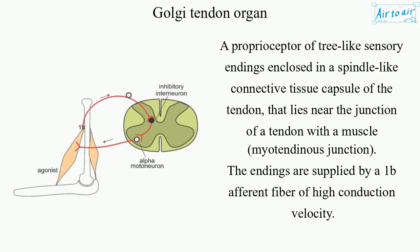A proprioceptor of tree-like sensory endings enclosed in a spindle-like connective tissue capsule of the tendon, that lies near the junction of a tendon with a muscle — the myotendinous junction. The endings are supplied by a 1b afferent fiber of high conduction velocity.